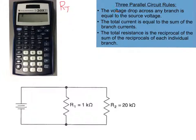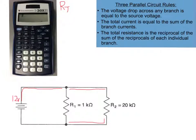Up here in the top corner I have the three rules for a parallel circuit. The first rule is that the voltage drop across any branch is equal to the source voltage. If we come down here to our source — let's say 12 volts from an automobile battery — regardless of where I measure voltage, I'm always going to measure back to the source. So my voltage will be consistent throughout the parallel circuit.